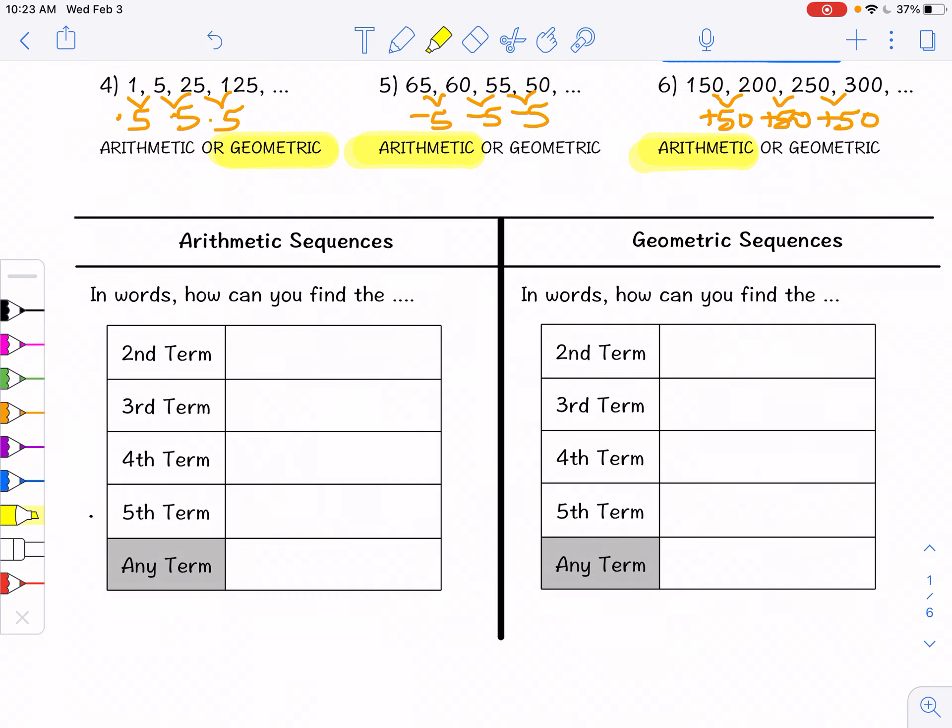So in words for an arithmetic sequence, how can we find the next term? For example, the second term we can take the first term plus some number, which is the common difference. Then we can take the second term and add some number to get the third term. Then for the fourth term we take the third term and add it to some number. So in general, to get any term we need the previous term, previous means the one before, plus a common difference, some number.